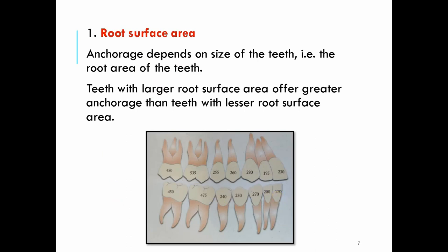The central incisor in the lower has only 170 mm² of root surface area. Incisors range from 170 to 230 mm², canines from 270 to 280 mm², premolars from 240 to 260 mm², and molars — because they are multi-rooted — have the maximum root surface area, ranging from 450 to 535 mm². The maximum root surface area is seen in the maxillary first molars, which is why they are commonly used as anchorage.